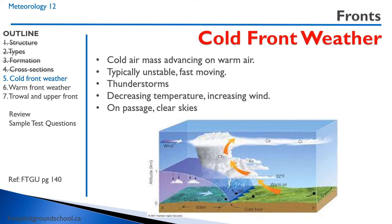Cold front weather is typically associated with unstable air creating thunderstorms. It's fast moving. You end up with decreasing temperature and increasing wind suddenly, but when it passes you end up with clear skies because you're now completely in a cold air mass.